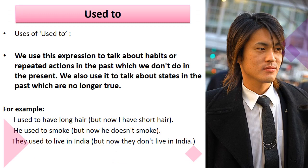The next modal is 'used to.' We use this expression to talk about habits or repeated actions in the past which we don't do in the present. We also use it to talk about states in the past which are no longer true. For example: 'I used to have long hair' — it means now I have short hair. 'He used to smoke' — but now he doesn't smoke. 'They used to live in India' — meaning now they don't live in India.